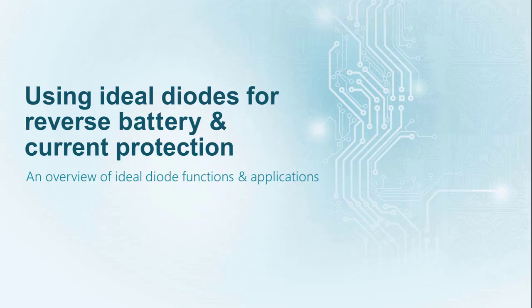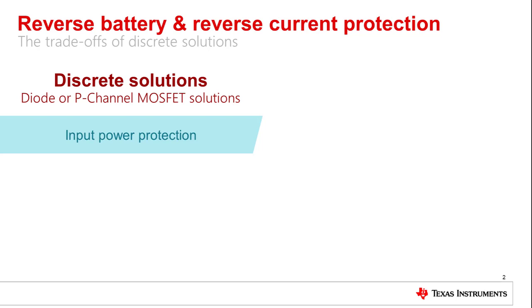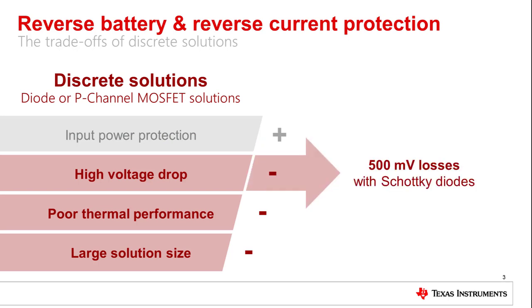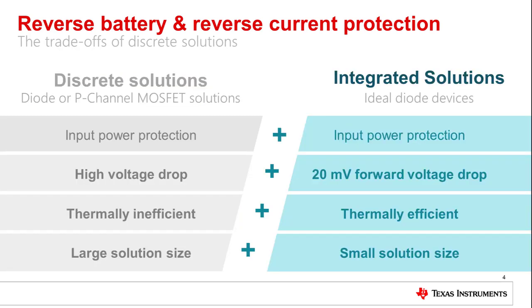Hello, and welcome to Using Ideal Diodes for Reverse Battery and Current Protection, an overview of ideal diode functions and applications. Implementing reverse battery and current protection using discrete components can get the job done, but it comes with tradeoffs. The power dissipation across discrete diodes is substantial and hard to ignore. TI's ideal diode devices are integrated circuits that mimic the behavior of an ideal diode with a fraction of the discrete solution size. Read more at ti.com/idealdiode, or continue watching for a technical overview.